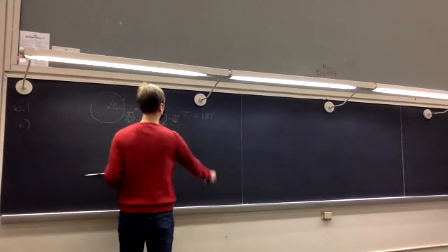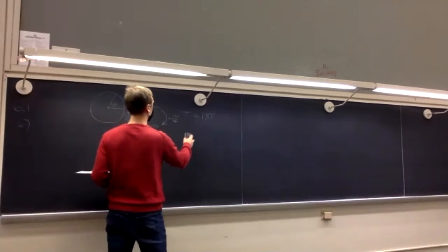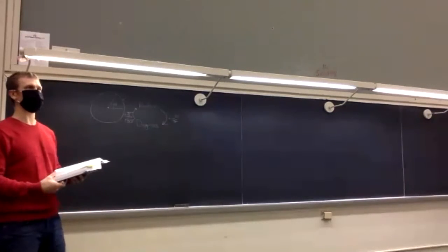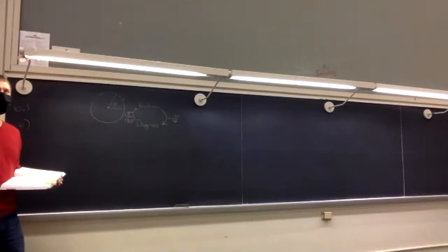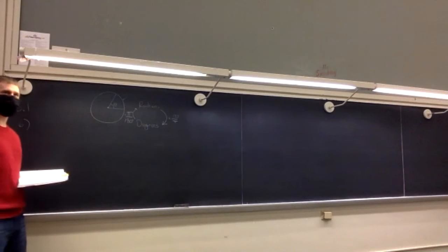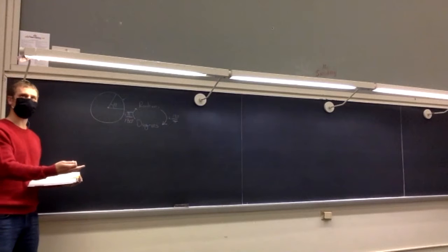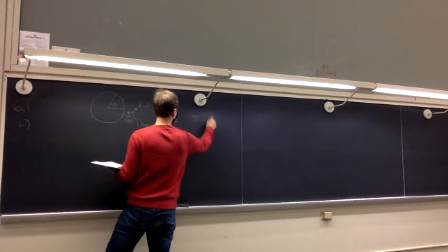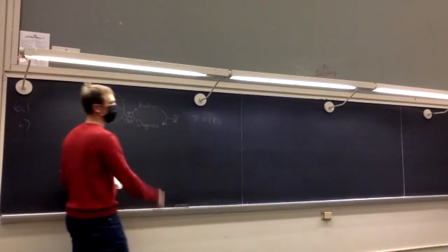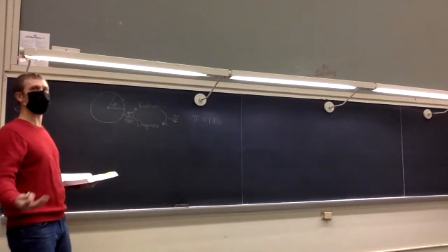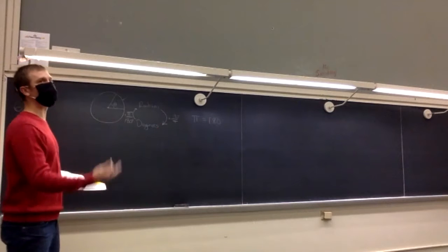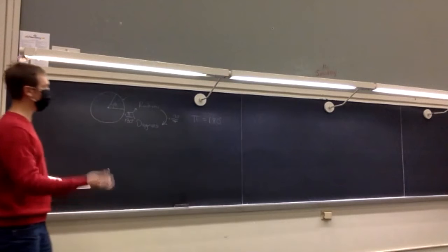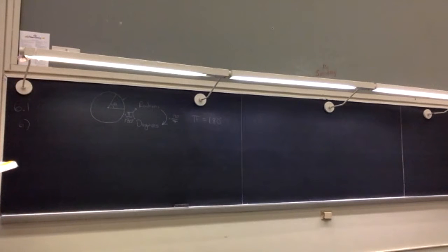It seems weird to say that π equals 180 degrees — that's ridiculous — but it does. We're talking about π radians and 180 degrees. Of course you can have different numbers equaling each other so long as the context is obvious, and usually that comes from units.